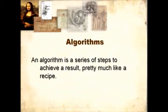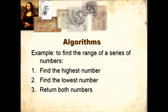Algorithms. An algorithm is a series of steps to achieve a result, pretty much like a recipe. For example, if you want to find the range of a series of numbers, you find the highest number, then you find the lowest number, and then you return both numbers.